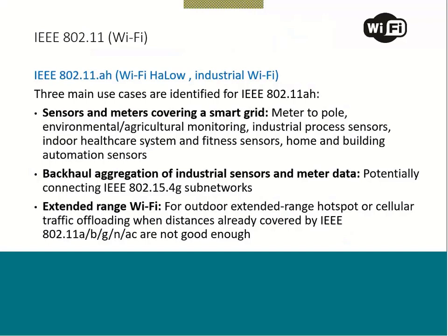The second use case is backhaul aggregation of industrial sensor and meter data, potentially connecting IEEE 802.15.4G sub-networks. Backhaul means the connection between base stations — for example, using optical fiber or wireless technology to connect base stations together. The third use case is extended range Wi-Fi for outdoor extended-range hotspot or cellular traffic offloading when the distances covered by A, B, G, N, or AC are not sufficient.